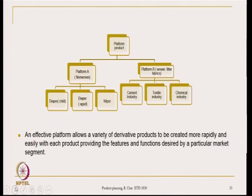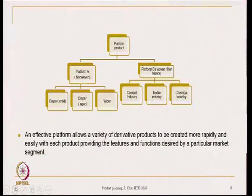Another example is a non-woven product platform. If you have a non-woven material platform, you can make various types of products from the same non-woven fabrics: diapers for children, wipes, filter fabrics for cement, textile, chemical, or pharmaceutical industries. When you have an oven filter fabric-making unit, the same fabrics can go for cement, textile, or chemical industries. The same platform is used to serve different types of industries.